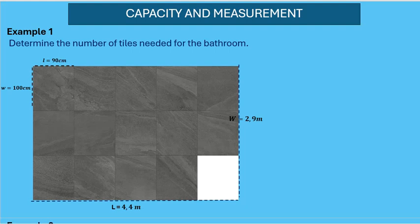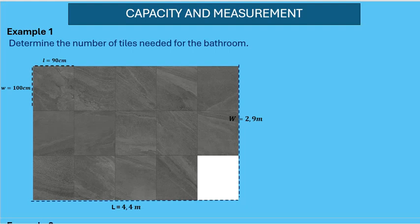We do the same thing for the width — divide the width of the bathroom by the width of each tile, then multiply the fittings. The issue is if the dimensions of the bathroom are given in meters but the dimensions of a tile are given in centimeters, we cannot divide meters by centimeters. So we need to convert either centimeters to meters or meters to centimeters.